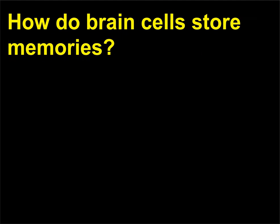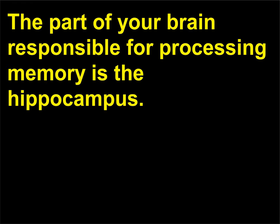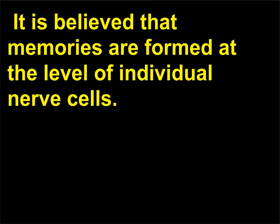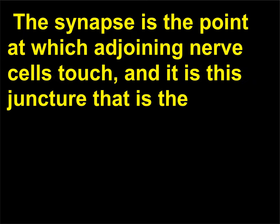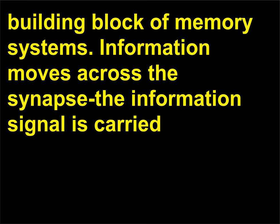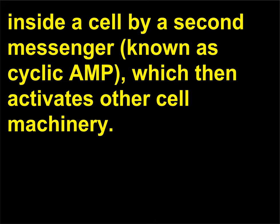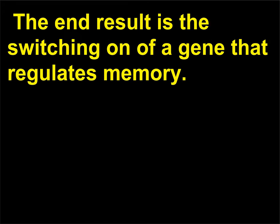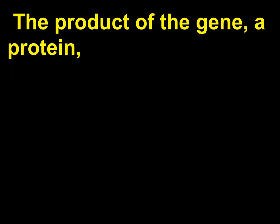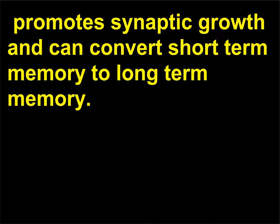How do brain cells store memories? The part of your brain responsible for processing memory is the hippocampus. It is believed that memories are formed at the level of individual nerve cells. The synapse is the point at which adjoining nerve cells touch, and it is this juncture that is the building block of memory systems. Information moves across the synapse; the signal is carried inside a cell by a second messenger known as cyclic AMP, which then activates other cell machinery. The end result is the switching on of a gene that regulates memory. The product of the gene, a protein, promotes synaptic growth and can convert short-term memory to long-term memory.